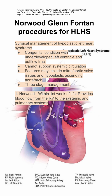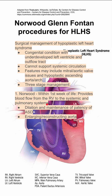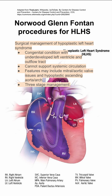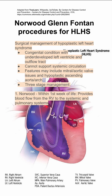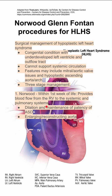The management of this condition requires three procedures. The first is called the Norwood procedure, and it usually occurs in the first week of life. This provides blood flow from the right ventricle to the systemic and pulmonary systems. It involves dilation and maintenance of the ASD shown up here — you can make that a little bit bigger, a little bit more robust.